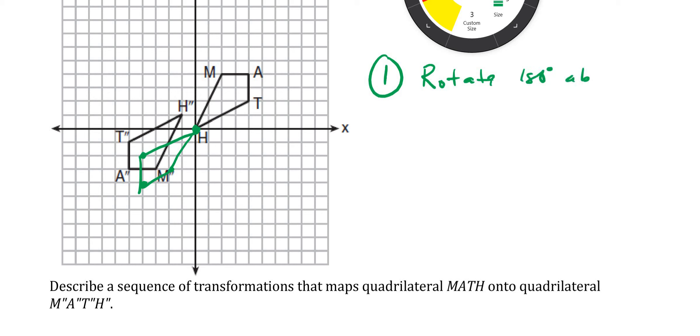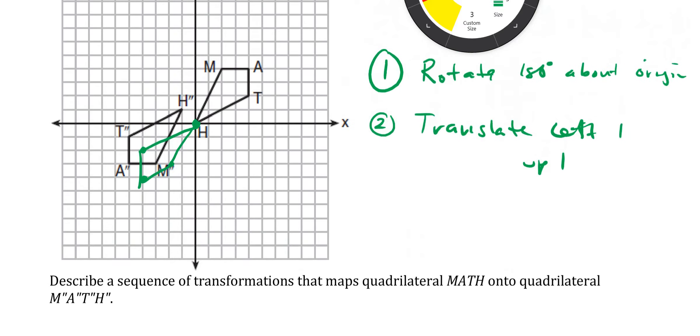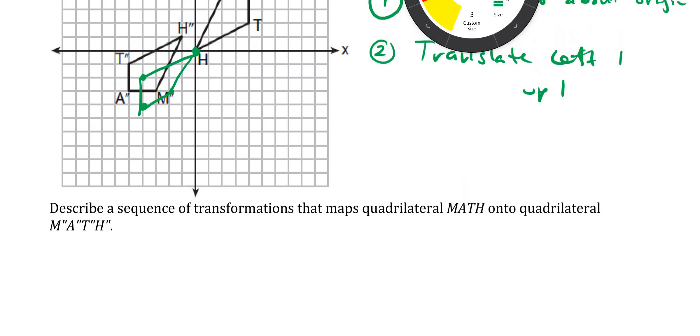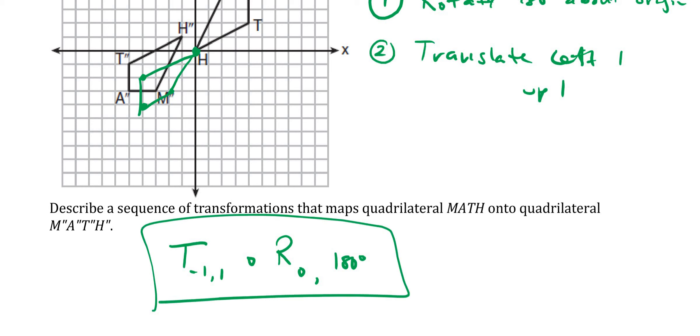Then I just have to shift to the left one, up one. So I'm going to first rotate 180 degrees about the origin. Then I'm going to translate left one, up one. That's a description, or I could even do a composition notation. So I could say I translated first to the left one, up one, after I rotated about the origin 180 degrees. Again, not the only answer, but probably the easiest one to see.